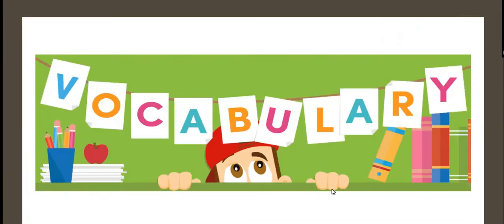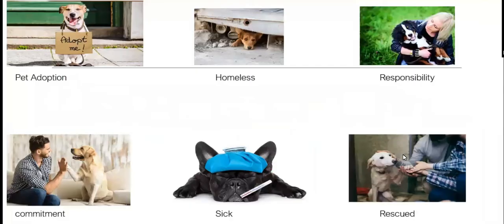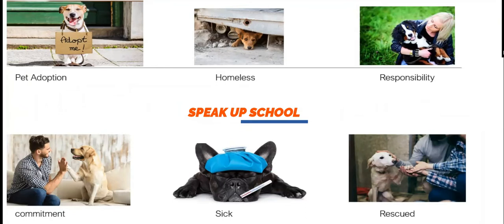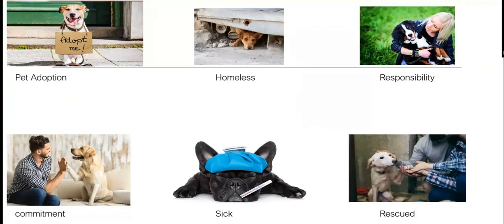We're going to see the vocabulary. First of all, we have 'pet adoption.' Pet adoption is pretty simple — it basically consists of you going to an animal shelter and adopting a pet: a cat, a dog, a hamster, whatever animal they have. You don't have to pay for them; you basically just sign an adoption form in which you express your commitment and your responsibility for that little animal.